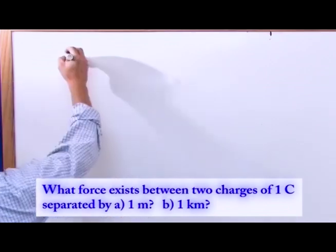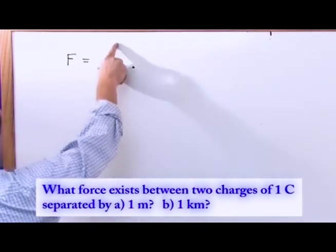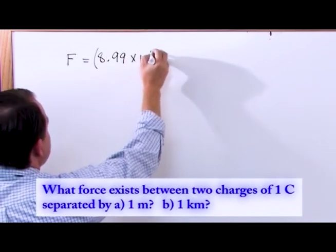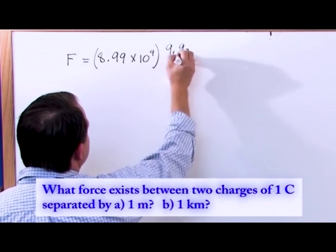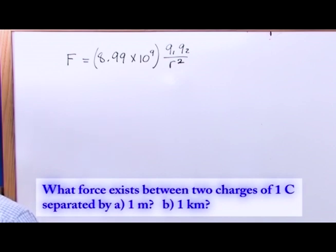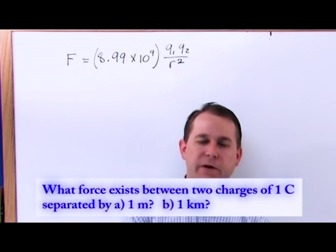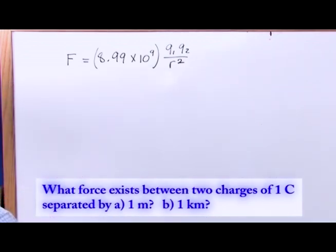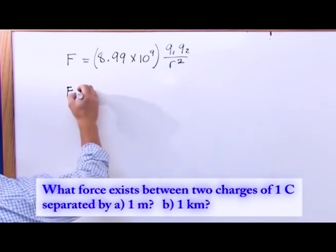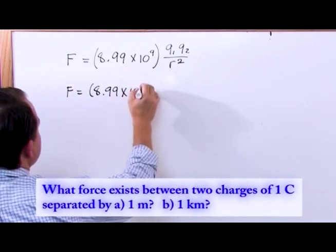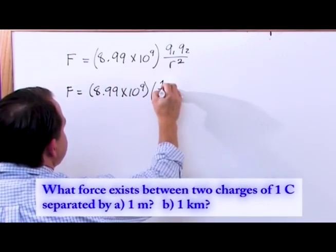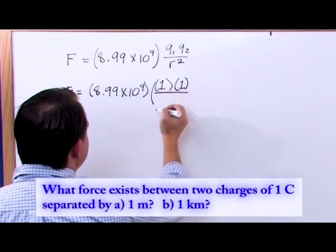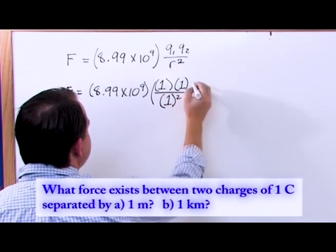Remember that Coulomb's Law is: the force equals — instead of one over four pi epsilon naught — we're going to use this constant, which is 8.99 times 10 to the 9, times the first charge times the second charge over R squared. Both charges are one coulomb. The fact that there's no positive or negative in front means both of them are positive — if it doesn't say negative, you're assuming it's positive, just like in algebra. So two charges, one coulomb each, separated by one meter.